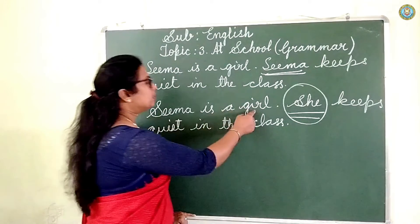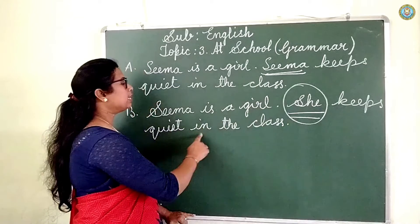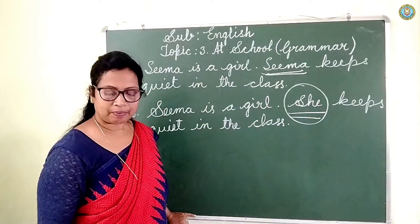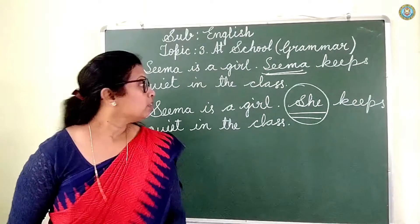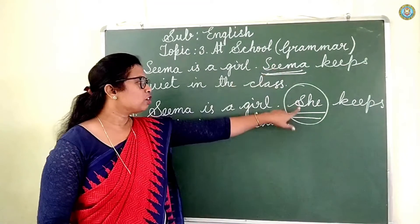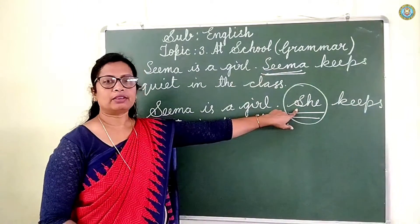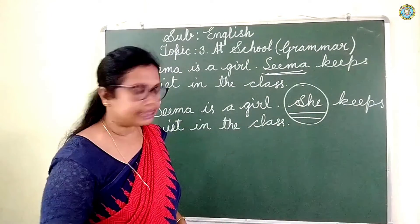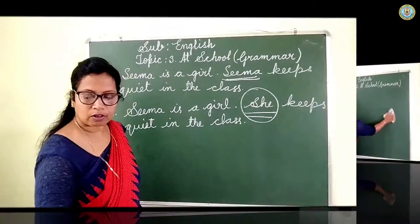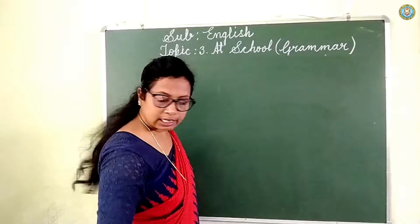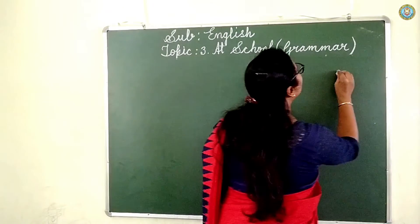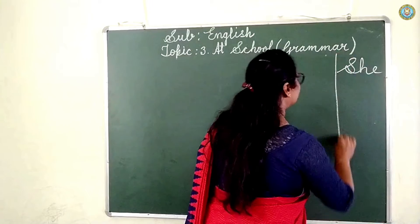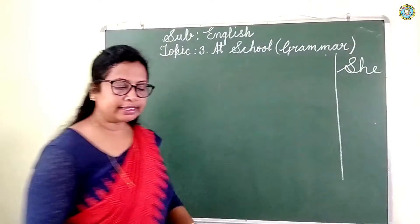So: 'Sima is a girl. She keeps quiet in the class.' Which word is used in place of Sima? She. I will write here: she. Look at the next sentence.